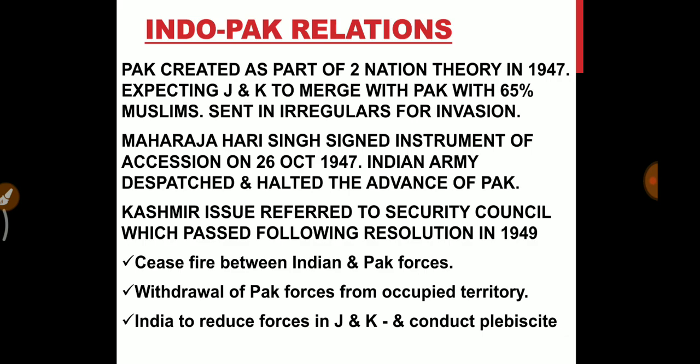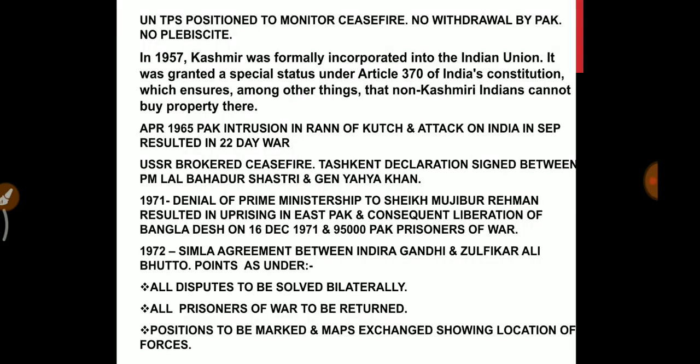The UN Security Council passed a resolution in 1949 with the following points: first, a ceasefire between Indian and Pakistan forces; second, withdrawal of Pakistan forces from occupied territory; third, India to reduce forces in J&K and conduct a plebiscite. UNTSO was positioned to monitor the ceasefire. However, there was no withdrawal by Pakistan, so there was no plebiscite.